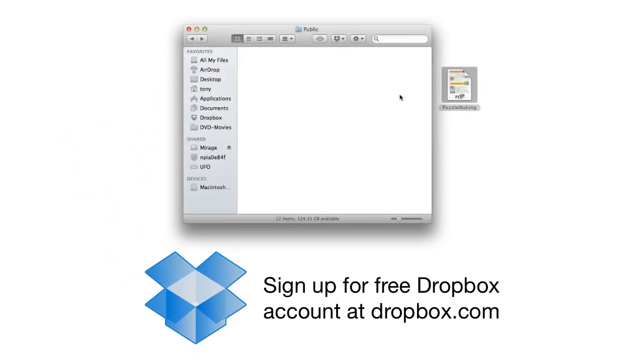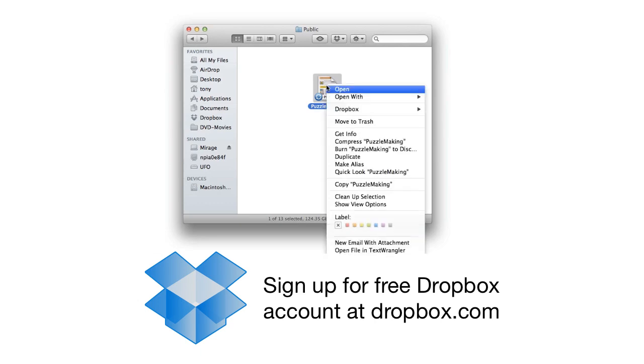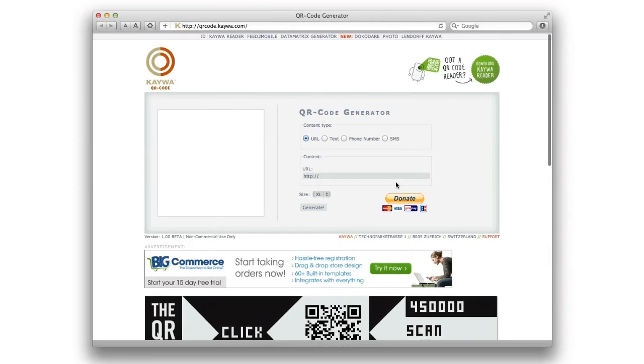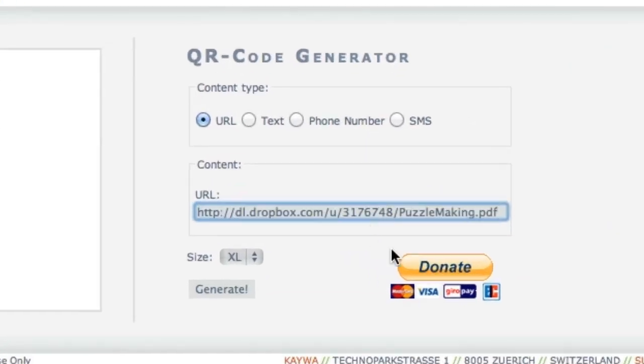One way to distribute a file is to place it in your Dropbox public folder. Copy the Dropbox URL of that file and paste it into a QR code generator. Now, students can scan that code and access the file from your Dropbox.